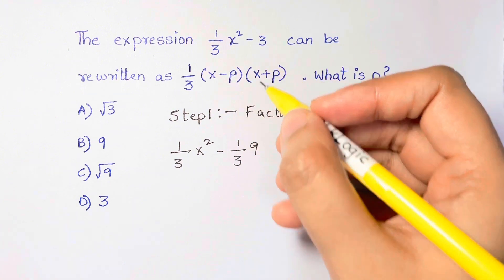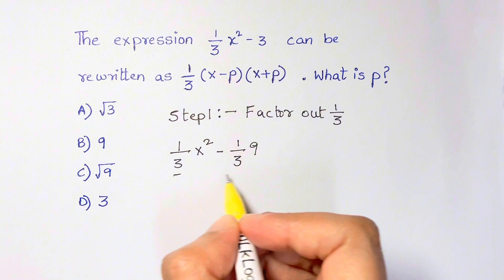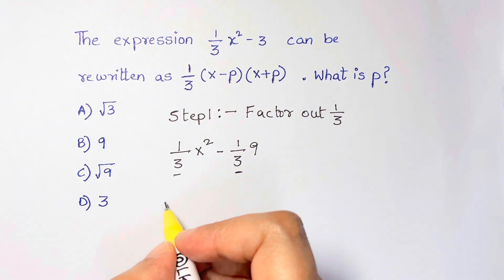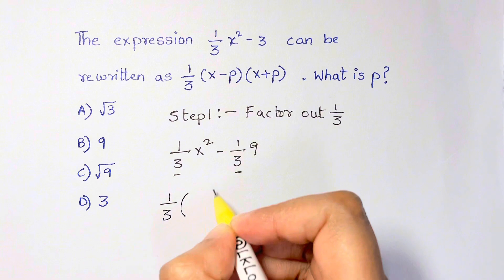Now we can easily pull out 1/3, and what is left inside the parentheses is x² - 9.